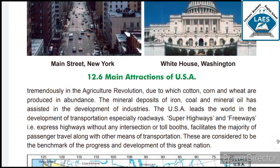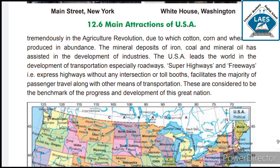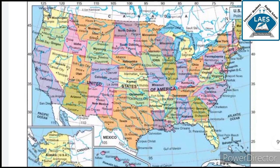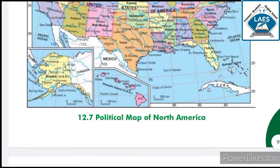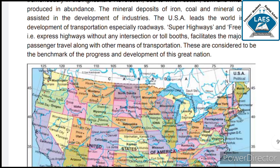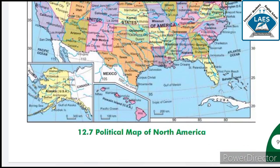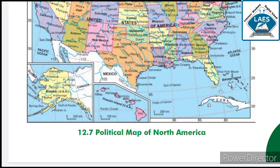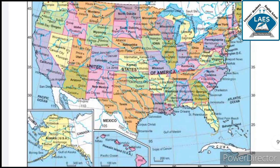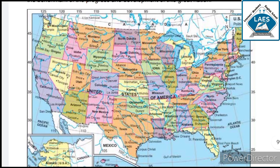These are considered to be the benchmark of the progress and development of this great nation. You can see the political map of North America in picture 12.7. You can study and we will continue in the next class.